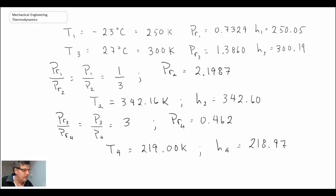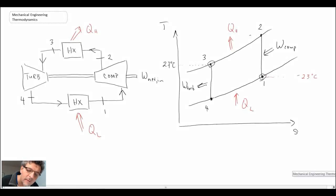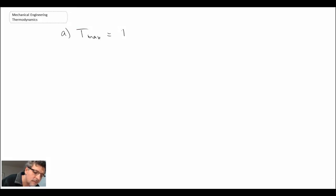There we have all the state information. We can now start answering the different questions that have been posed to us for the problem. The maximum temperature in our cycle is T2, and the minimum temperature is T4.